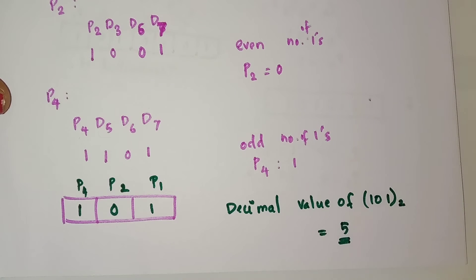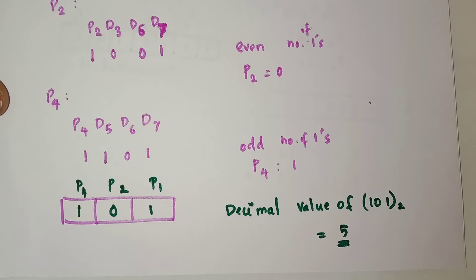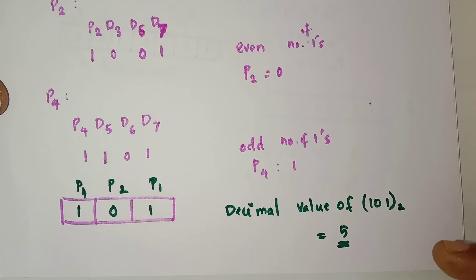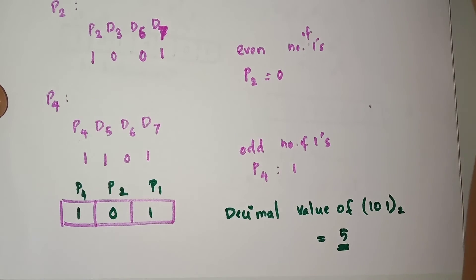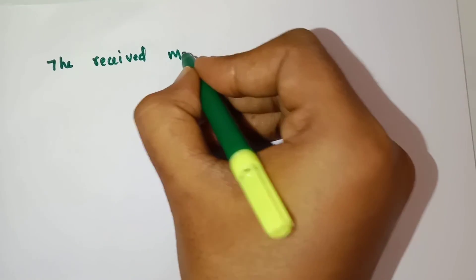The three bits 101 have a decimal value of 5. From this we understand that the fifth position of the received message has the error. We want to correct that position's bit. For correcting: if the value is 1 then invert it to 0; if the position has 0 then convert it to 1.